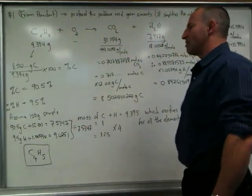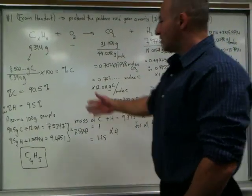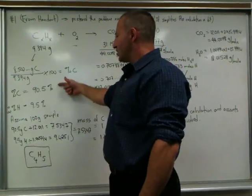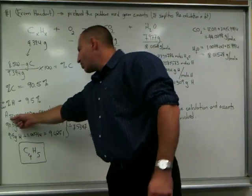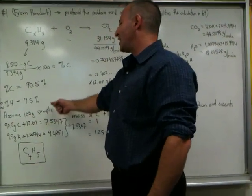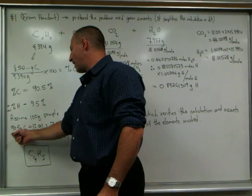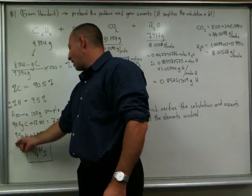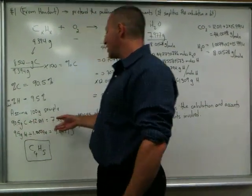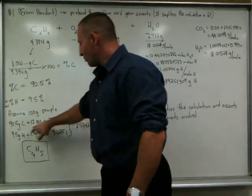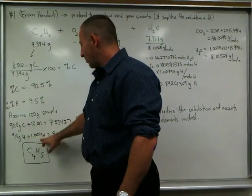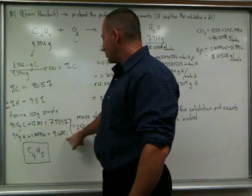So then we continue our calculation. We have these percentages. The molecule is 90.5% carbon, 9.5% hydrogen. Let's assume we have a 100 gram sample which allows us to say that we have 90.5 grams of carbon and 9.5 grams of hydrogen. And then we proceed with the normal calculation for the calculation of empirical formula. Divide by the molar mass of carbon. Divide by the molar mass of hydrogen. And you get these two numbers.